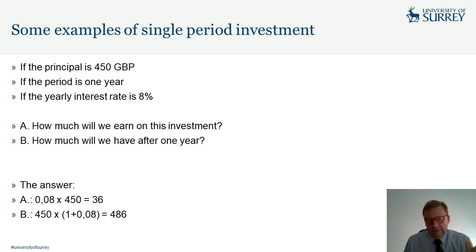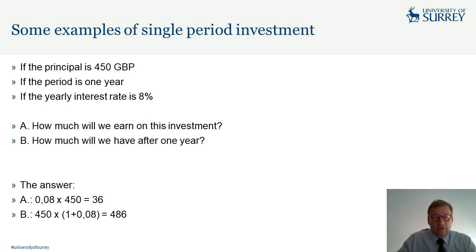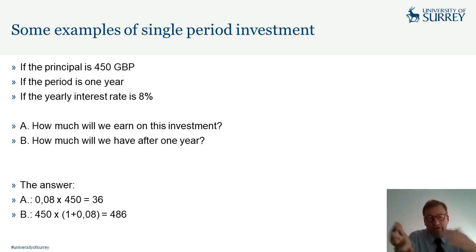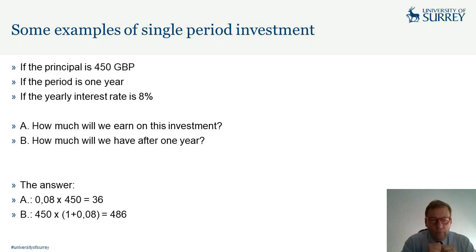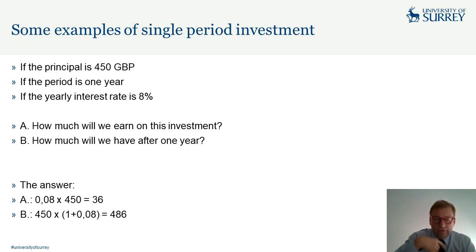I hope that's clear — there are no surprises. We put money into an investment and after a period we have more. Now let's do another example. Everything is the same — £450 for one year — but the interest rate changes to 4 percent. Please calculate in your notes: how much will you earn and how much will you have after one year?